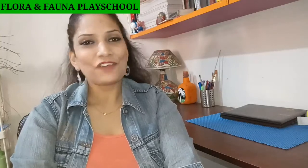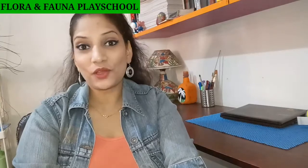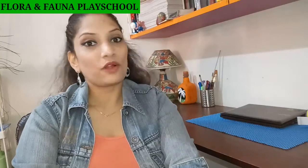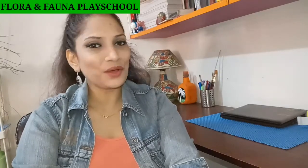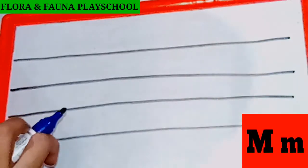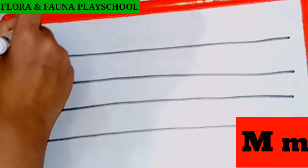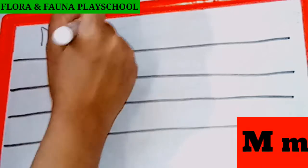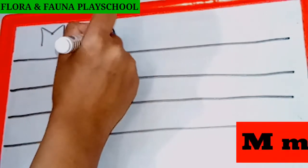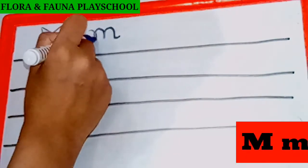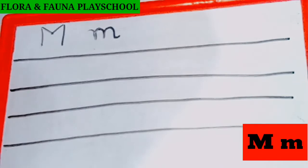Good morning class, welcome back to the classroom. Today in English we are going to learn how to write small letter N and small letter O. So let's begin. Kids, capital M is written like this — you know it, right? Small M is written like this, okay? Can you see this? So we will learn how to write small M.